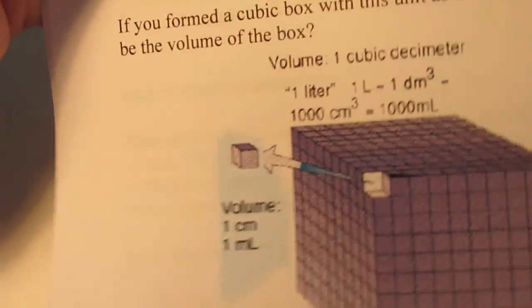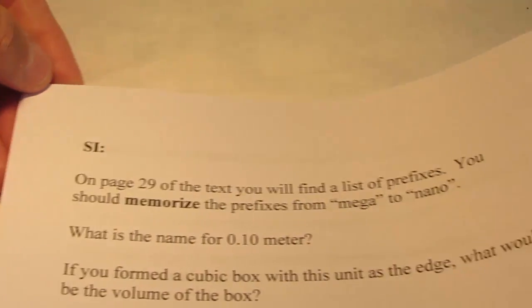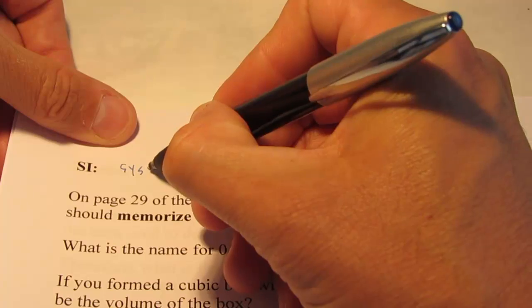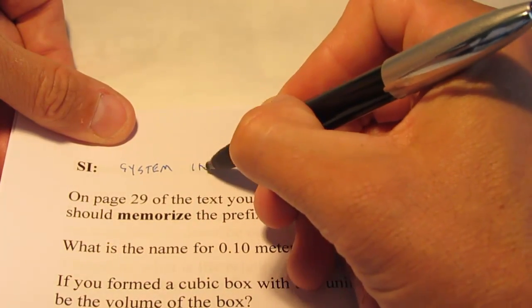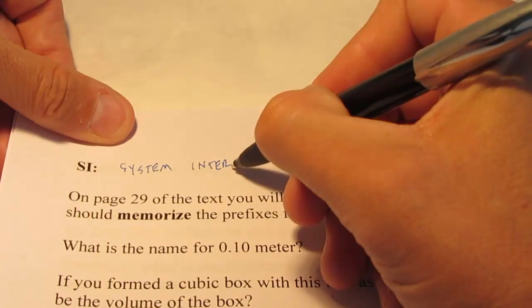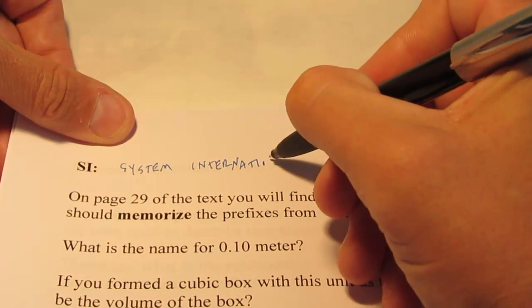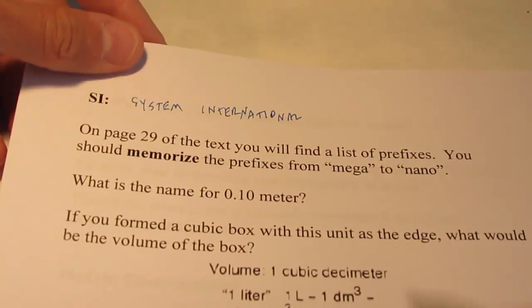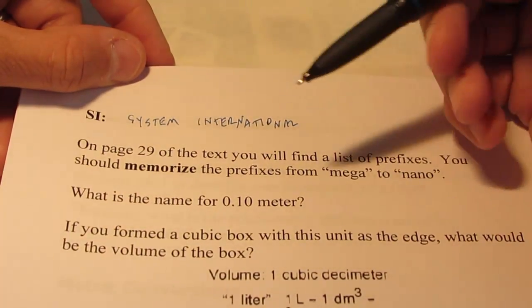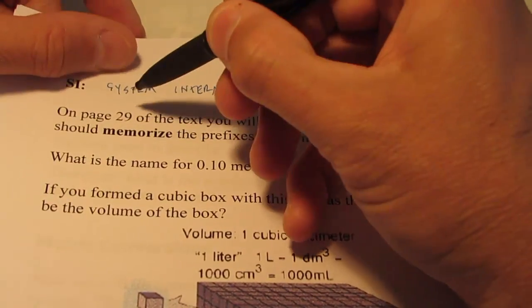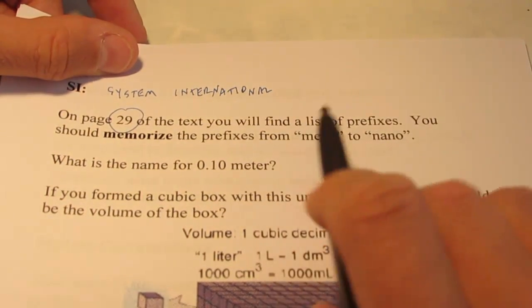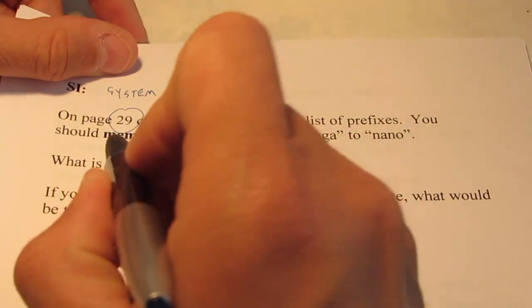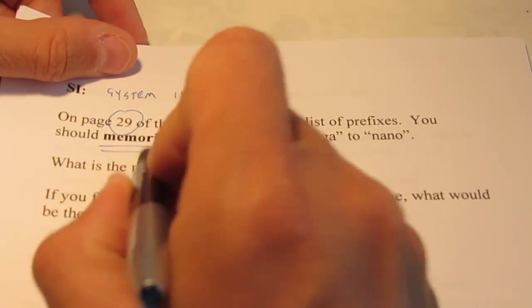Okay, moving right along, I have mentioned the term SI for you already. That stands for System International. That sounds backwards to us, doesn't it? It's a French term. We like to say an international system of units. Now on page 29 of your textbook, you will find a list of prefixes.